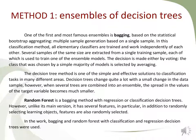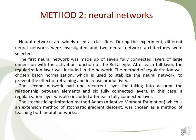Regarding classification methods: the decision tree method is a well-known and effective method of classification. However, decision tree models are unstable, and most often ensembles of models are used. In our research, bagging and random forest with classification and regression trees were applied. During the experiments, different neural networks were investigated and two were selected: the first is a fully connected perceptron with regularization layers, and the second contains recurrent layers to take into account the relations between elements. For both neural networks, the Adam stochastic optimization algorithm was used.